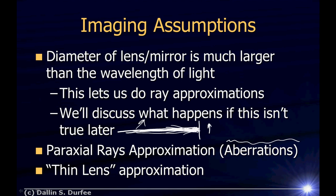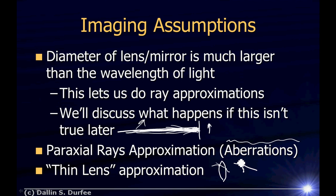We're also going to make the thin lens approximation when we talk about lenses next time. A real lens has two surfaces — light bends at one surface and bends at the other. We're just going to consider those two bends as one big bend and ignore the space that the light travels inside the lens. That's the thin lens approximation.